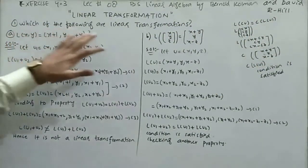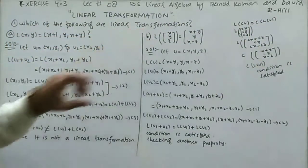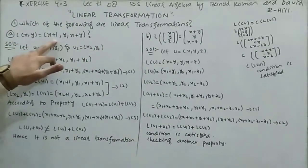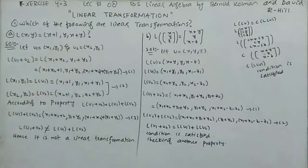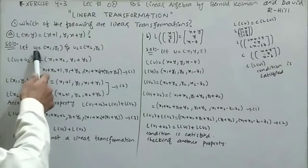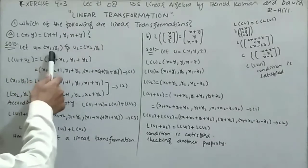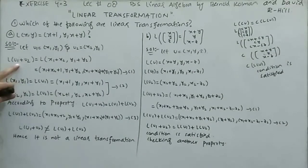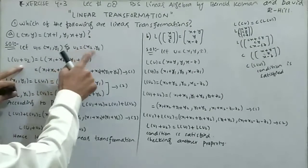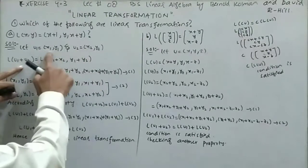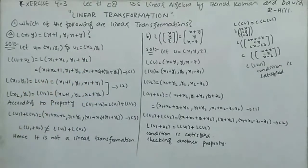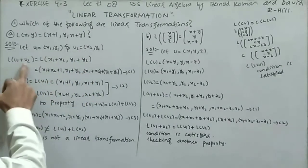The first question asks which of the following are linear transformations. Part A: L(x, y) = (x+1, y, x+y). Let's suppose u1 = (x1, y1) and u2 = (x2, y2). So u1 plus u2 will be (x1+x2, y1+y2). This is L of u1 plus u2.